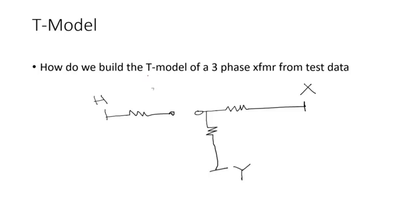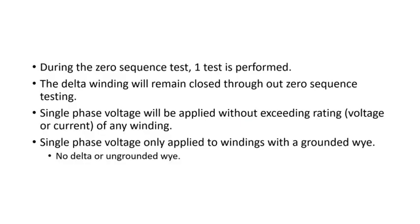In the T-model, the Y side is connected to neutral or ground. The high side, since it has no neutral, has no access to ground — that's why we show it as open. During the zero sequence test, only one test is performed because you have one grounded Y. The delta winding will remain closed throughout the zero sequence test.